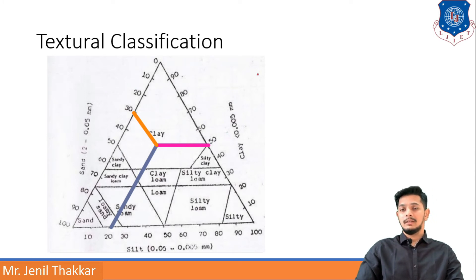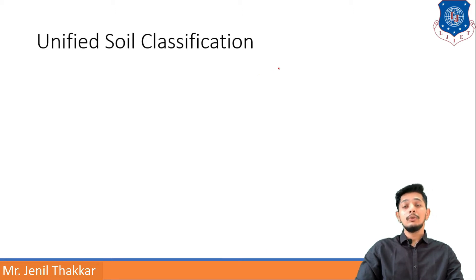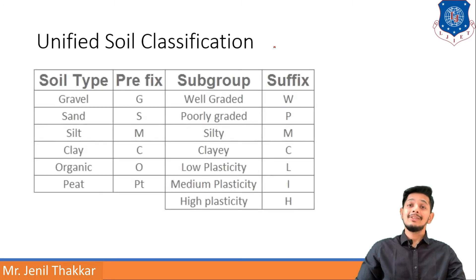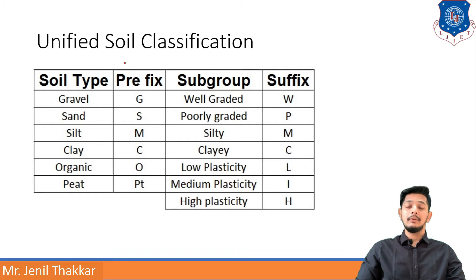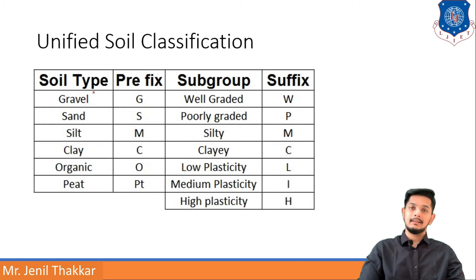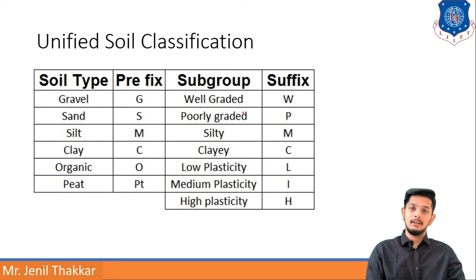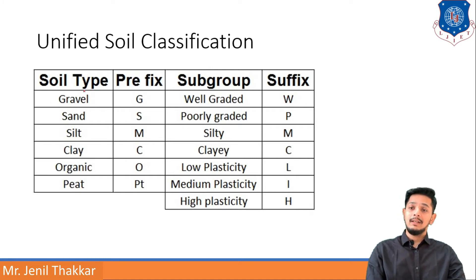Let us move to unified soil classification. Unified soil classification uses a prefix and a suffix to classify a soil type. You can see a table with soil type and prefix on one side, and subgroup and suffix on the other. First you decide the prefix, then the suffix. If it is a gravel, the prefix is G. If it is poorly graded gravel, the suffix is P, so it becomes GP.